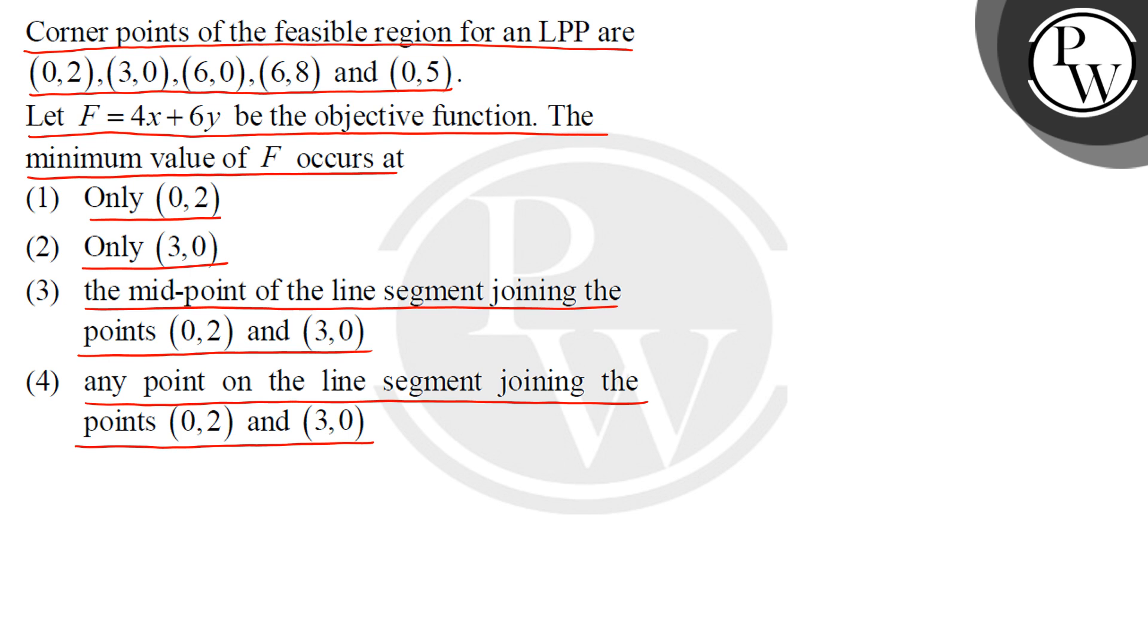So let's check which is the correct option. First, let's look at what the minimum value of F is and where it occurs. The corner points we have given are (0,2), (3,0), (6,0), (6,8), (0,5). We have the objective function F = 4x + 6y.